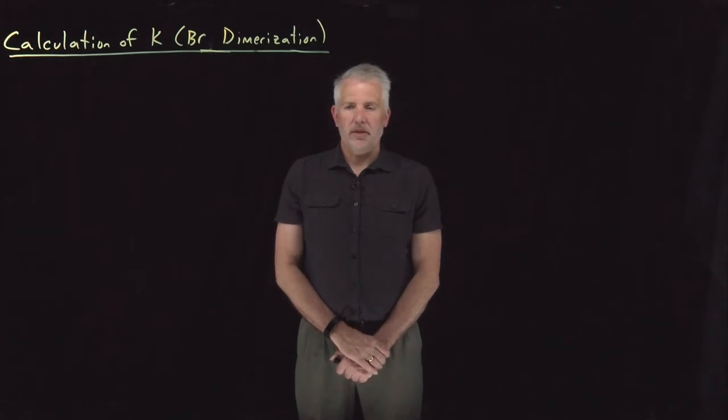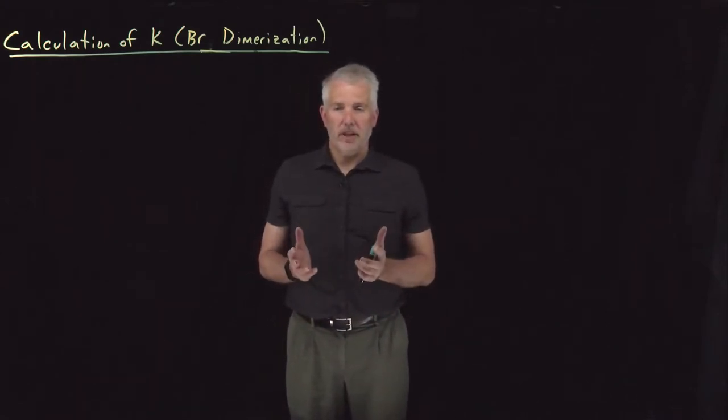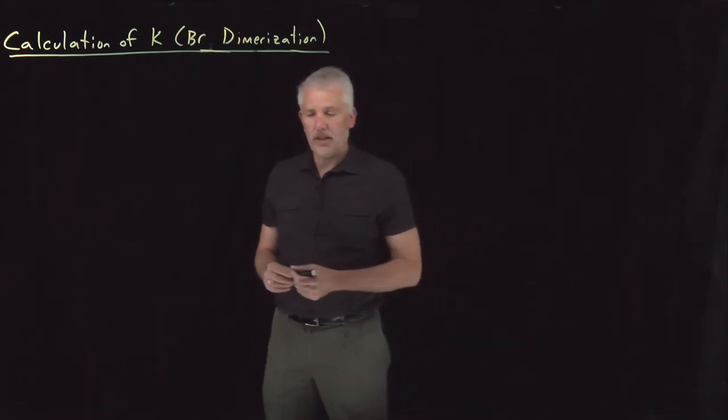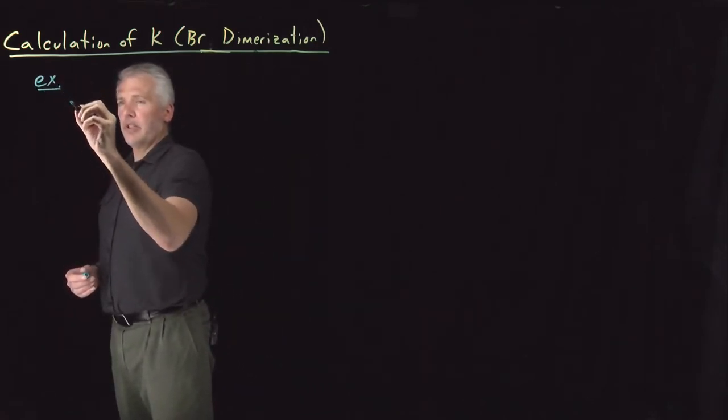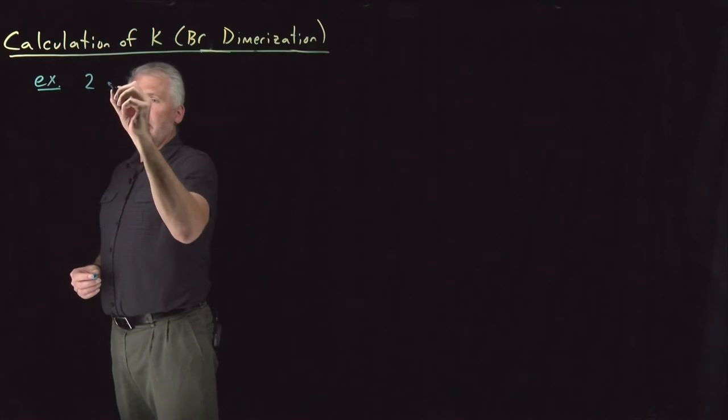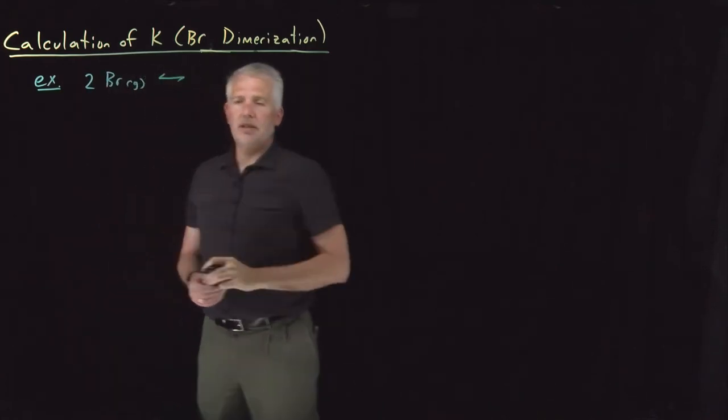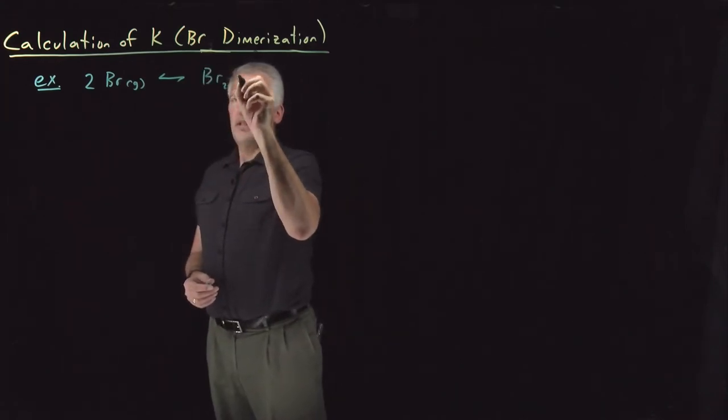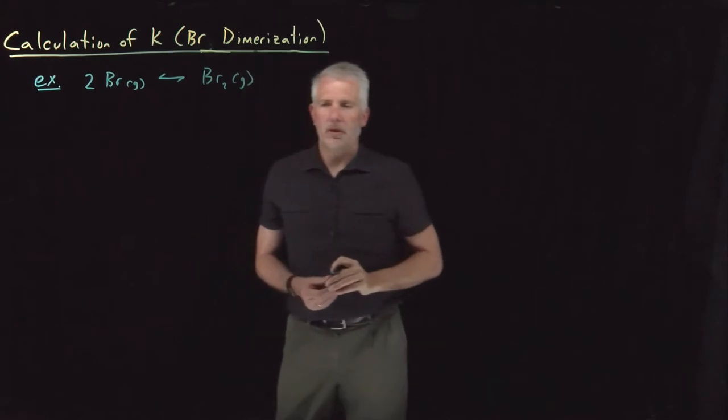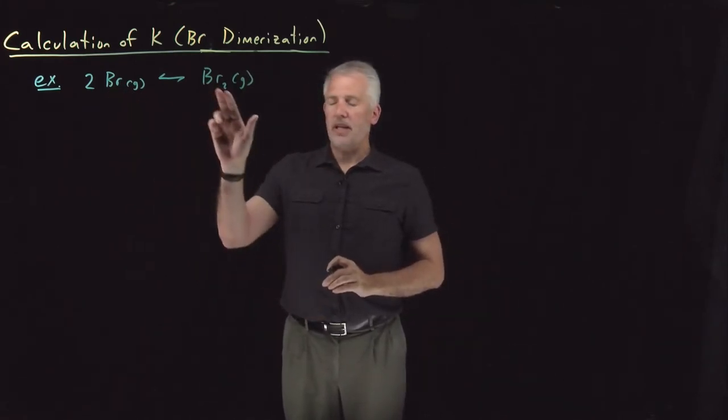Okay, so now we know how to calculate an equilibrium constant from partition functions, and we've seen if we have reactions that only involve diatomic molecules, there's some significant cancellation that occurs, but not every reaction involves only diatomic molecules. So let's take a simple molecule that still involves two gas phase species, but with some monatomic atoms instead of diatomic molecules.